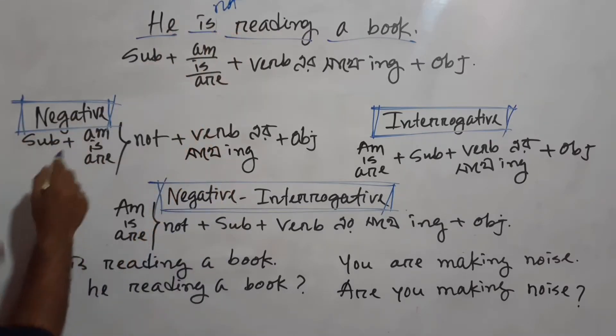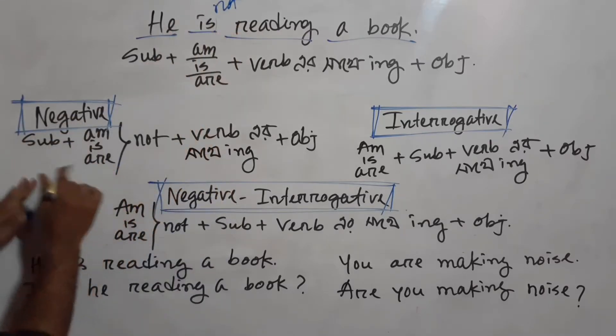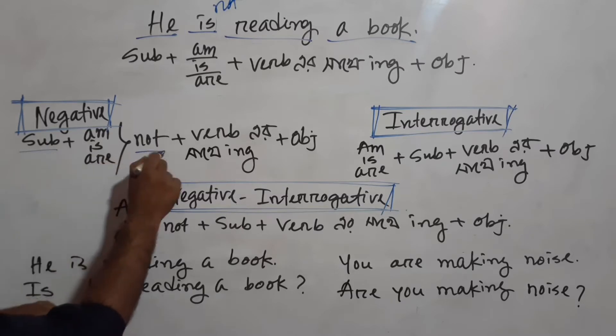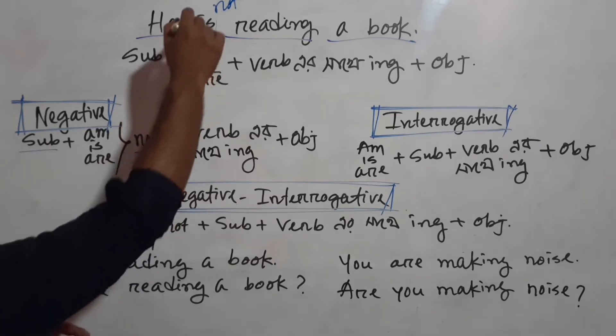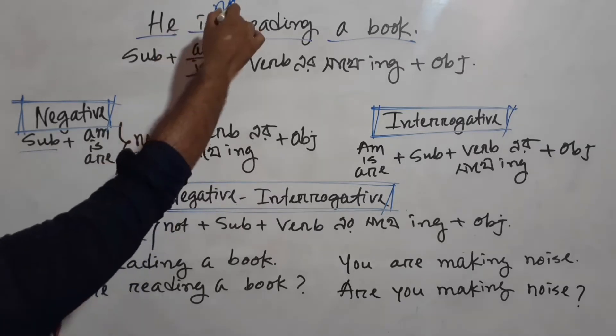The negative structure is: Subject, Auxiliary, NOT, Verb+ING, Object. The auxiliary is placed before NOT to form the negative sentence.